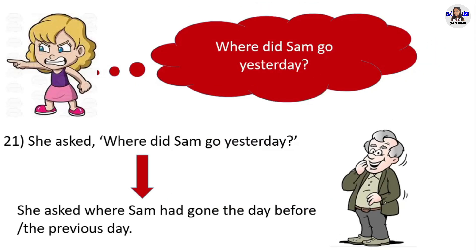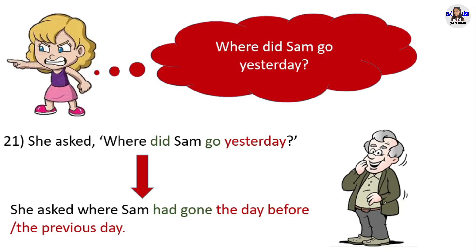Next example: 'Where did Sam go yesterday?' She asked 'Where did Sam go yesterday?' in direct speech. In reported speech, she asked where Sam had gone the day before. 'Did go' in past simple changes into 'had gone' in past perfect. 'Yesterday' is the time expression in this question; it changes into 'the day before' or 'the previous day,' but you can use only either of them.